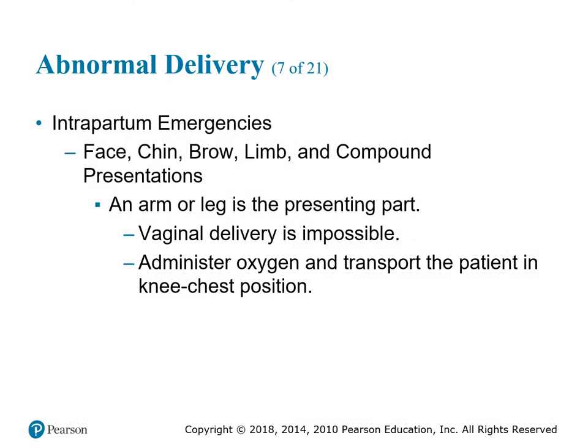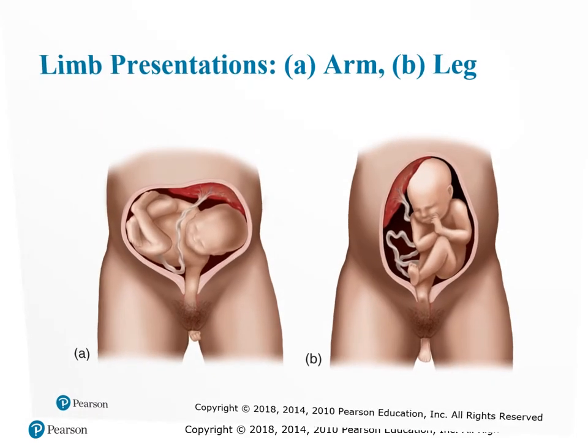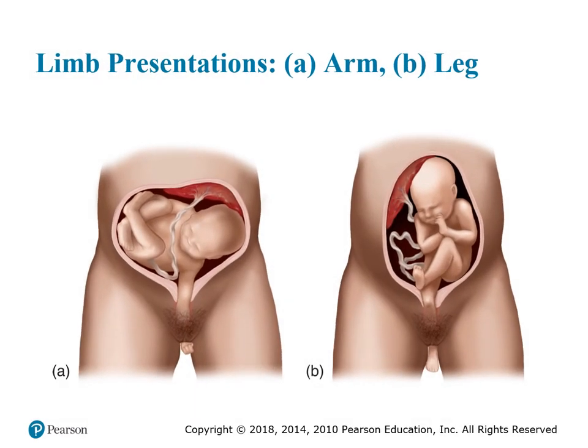Face, chin, brow, limb, or compound presentation: an arm or leg is the presenting part, and vaginal delivery is impossible. Administer high-flow O2 and transport the patient in the knee-chest position. Shoulder dystocia: the fetal shoulder is larger than the fetal head; the head delivers but retracts back into the vagina. Place the patient in the McRoberts position. If that alone does not work, apply suprapubic pressure. If neither works, follow medical direction to attempt a Gaskin maneuver.